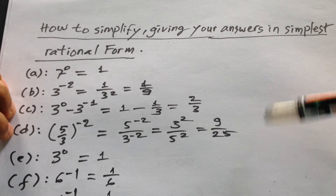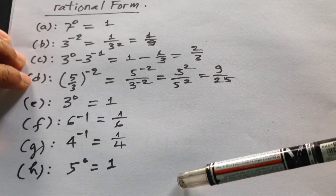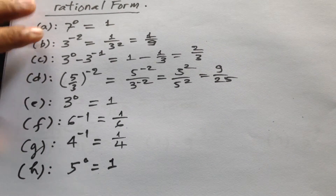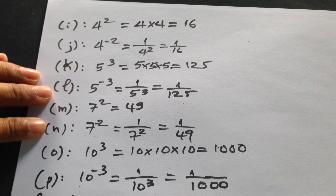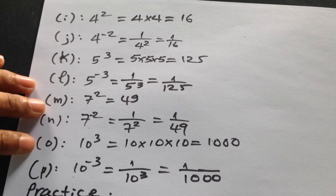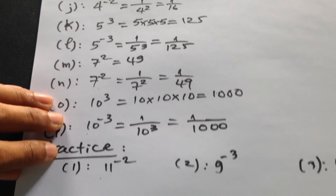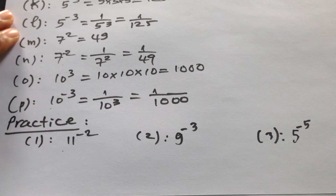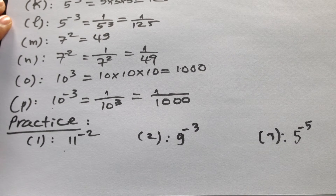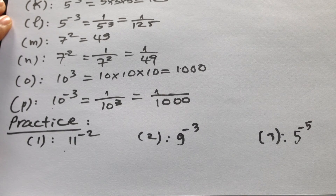Now we have practice for you — you can keep doing it. It is 11 to the power minus 2, 9 to the power minus 3, and 5 to the power minus 5.